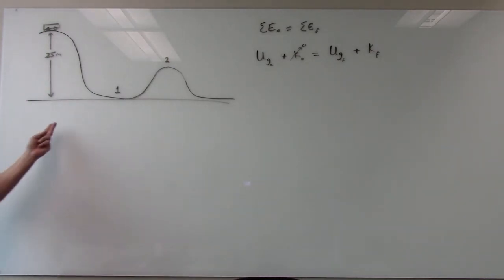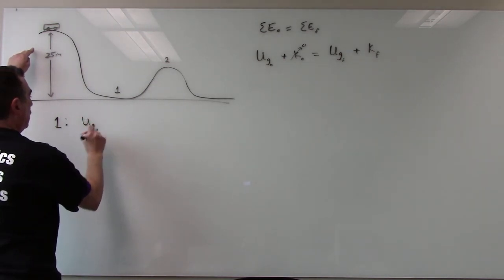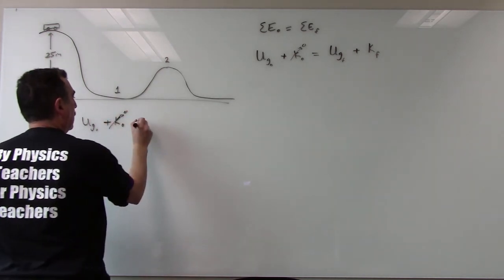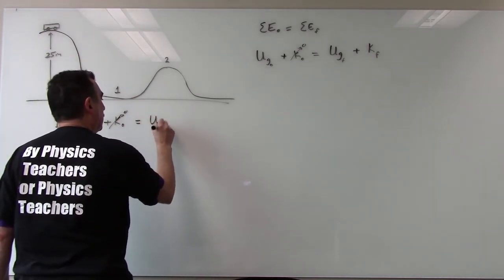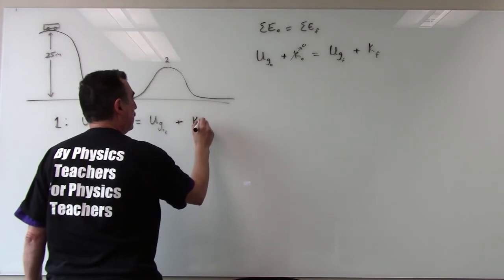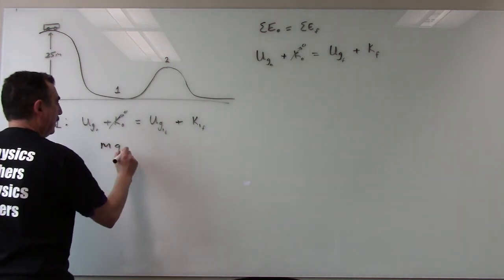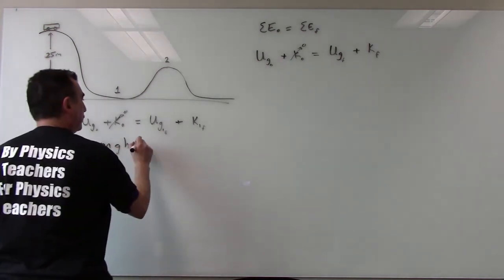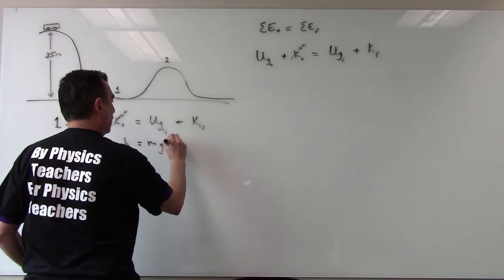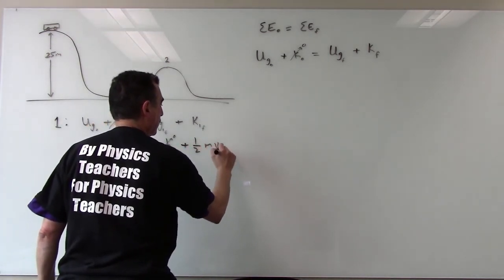So, let's tackle this particular problem for position 1. At 1 we have UG naught, gravitational potential energy, kinetic energy naught again zero equal to gravitational potential energy at position 1 final plus the kinetic energy position 1 final. So, let's put this into its proper formula mass times gravity times the height the 25 meters, mass times gravity times the height here which at 1 fortunately is 0, so this one doesn't exist it all completely drops out plus 1 half mass times velocity squared at position 1.